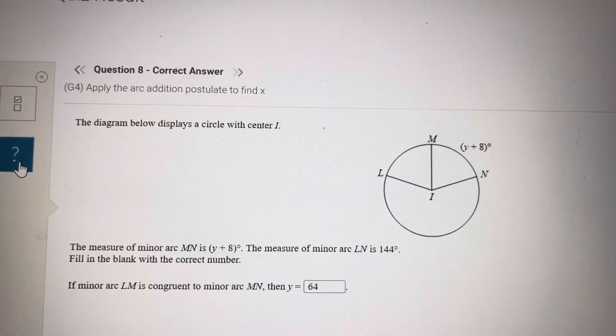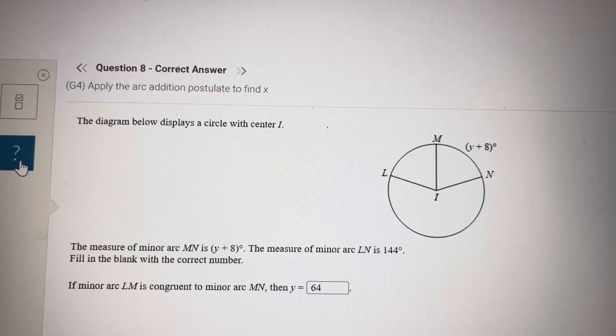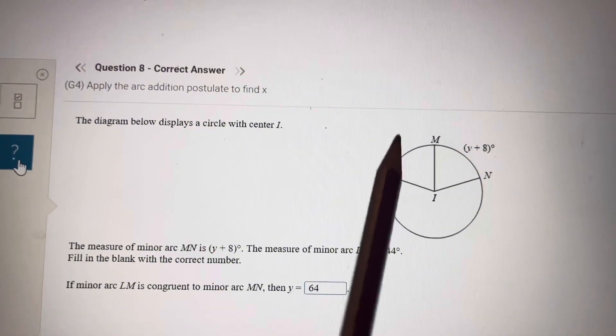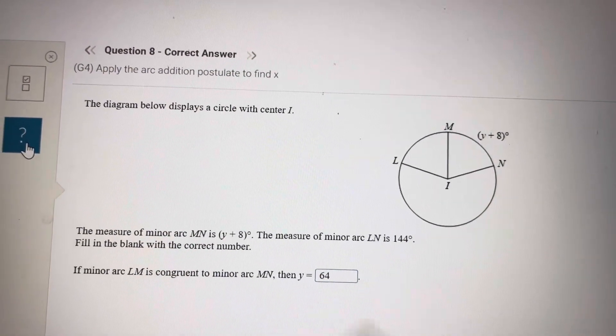So Y plus 8 is equal to 144 divided by 2, which is 72. 72. I'll take the 8 to the other side. 72 minus 8 is 64.